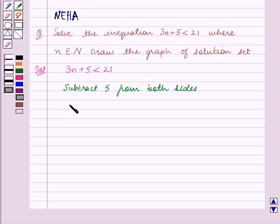We get 3n plus 5 minus 5 is less than 21 minus 5. The inequality remains the same because same quantity is being subtracted from both the sides.